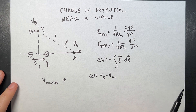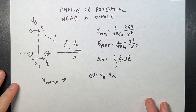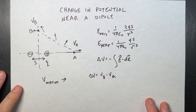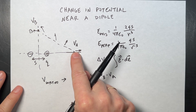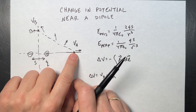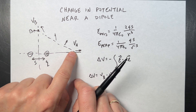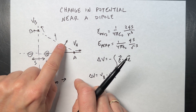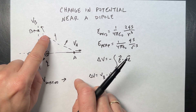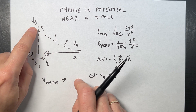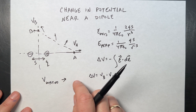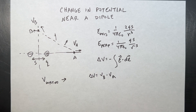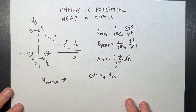After that, if you stick around, I'm going to build a numerical model in Python to move along this path and calculate the change in potential numerically and compare the two results. It's going to be fun.